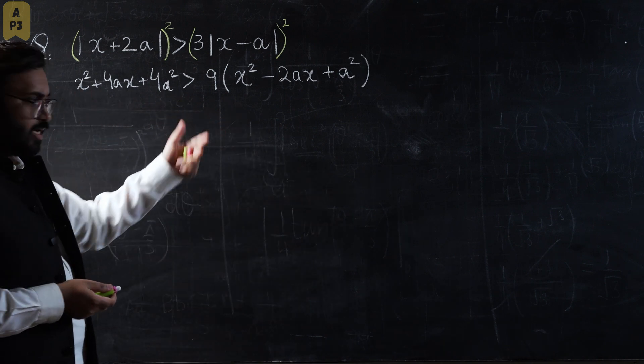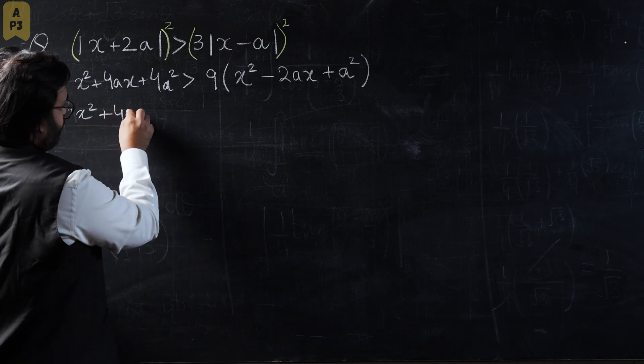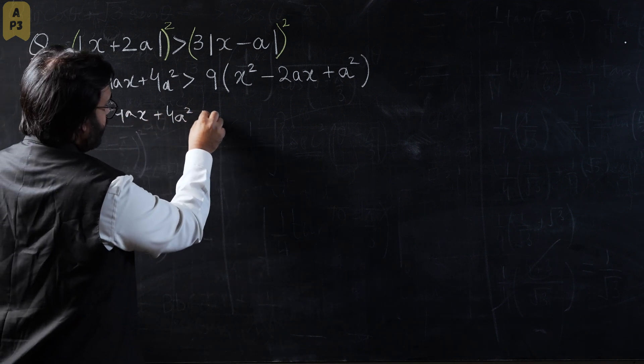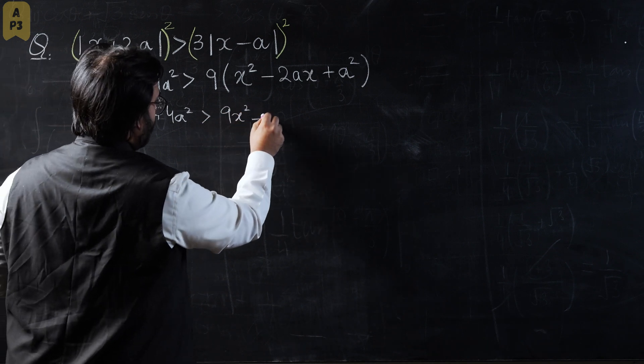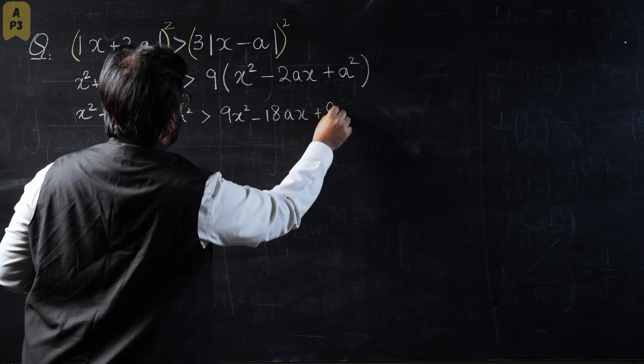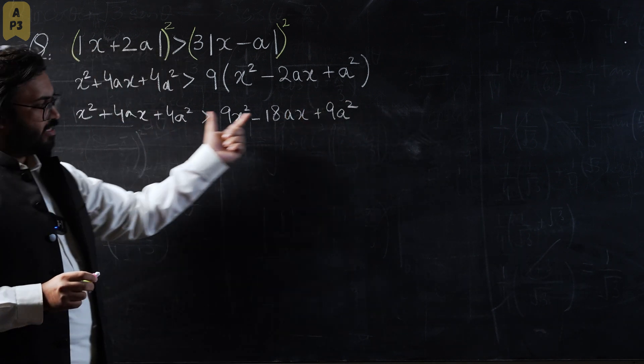This is the current inequality that we have. Let's expand everything and bring all the things to one side. So this would become x squared plus 4ax plus 4a squared, which would be greater than 9x squared minus 18ax plus 9a squared.